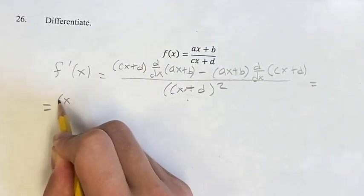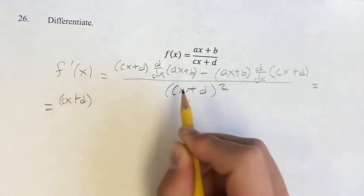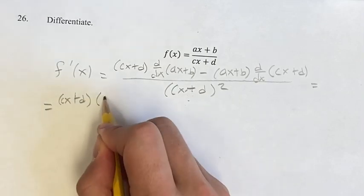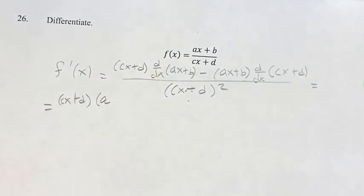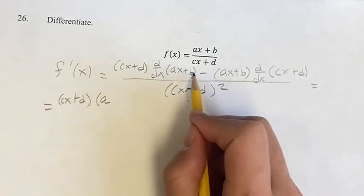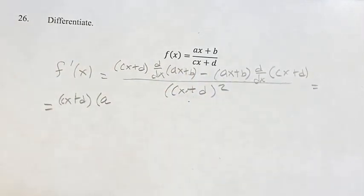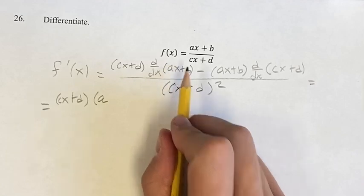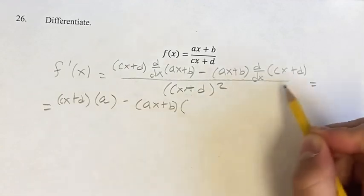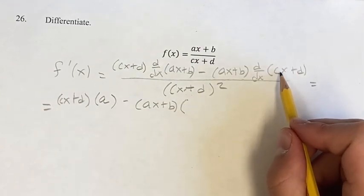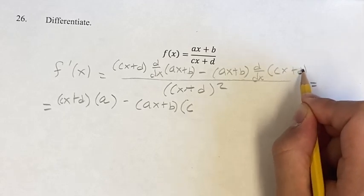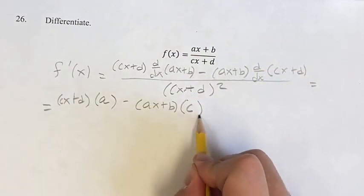So first step: solving those derivatives. The derivative of ax is a, since it's a linear term, its derivative is just its coefficient a. Plus the derivative of b — b is just a constant, so its derivative is 0. So that gives us a. Then the derivative of cx plus d: cx is a linear term, so its derivative is its coefficient c, plus the derivative of d which is a constant and equals 0, so c plus 0 is c.